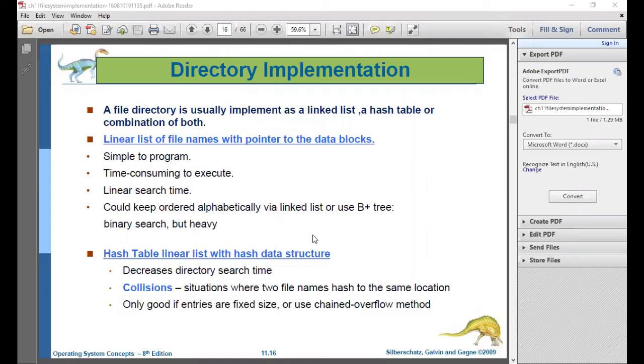Coming to the second technology which is hash table - hashing has a table with a key value and hash file name. A hash value is created for every file so that particular table will have a pointer to each of the blocks. It decreases directory search entry because instead of going in a linear fashion one after the other, you can directly go to the hash table and get the value of the file. Collision is a situation where two file names hash to the same location. If two file names are mapped onto the same location, there's a problem of collision.